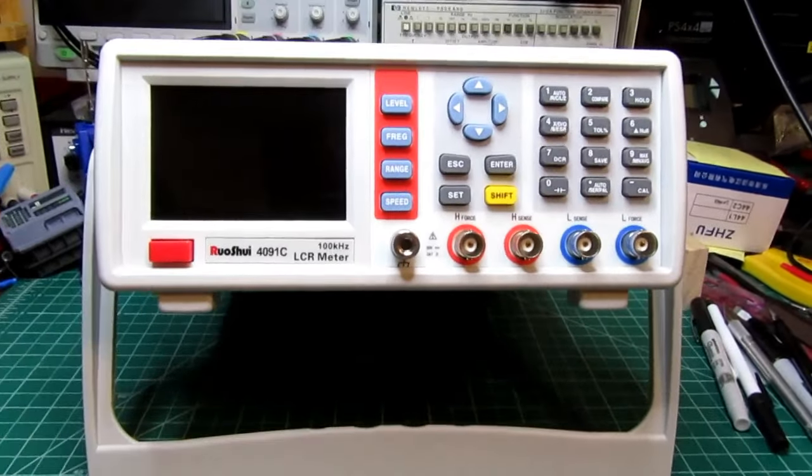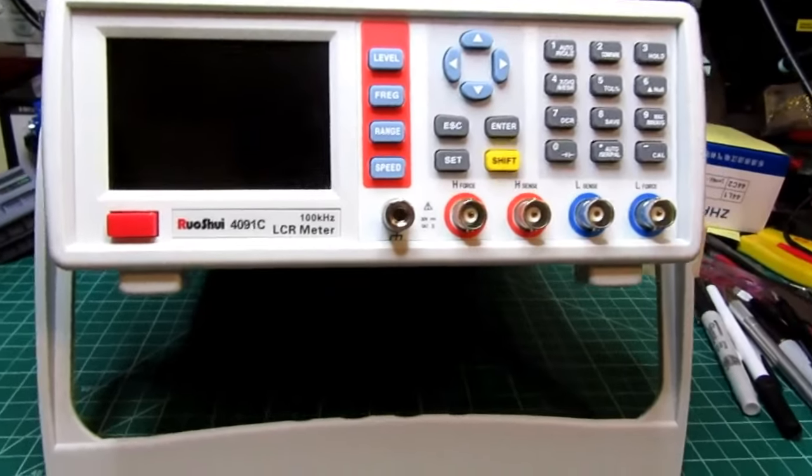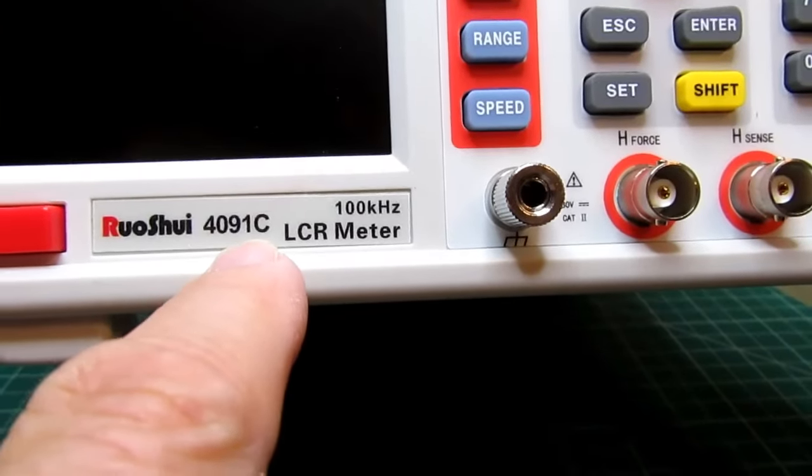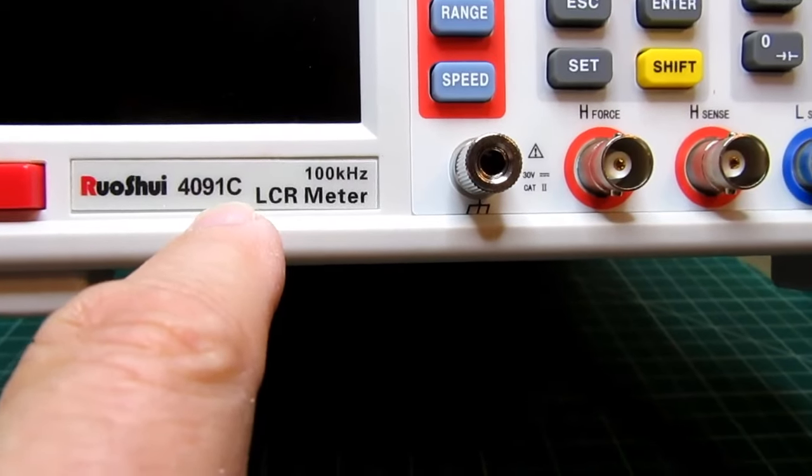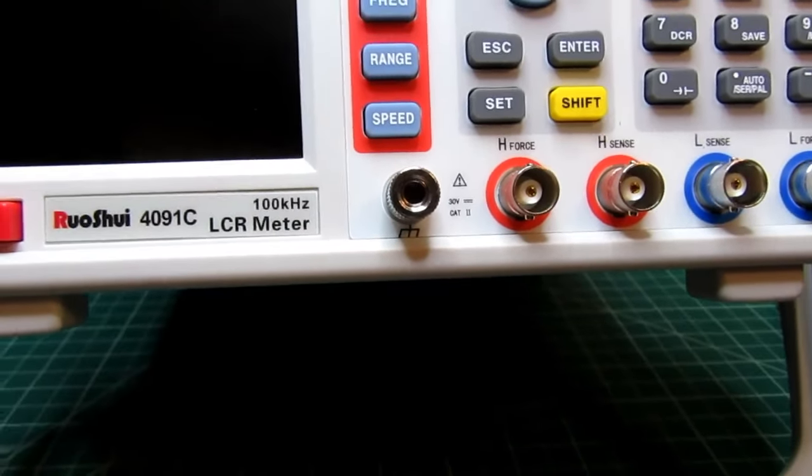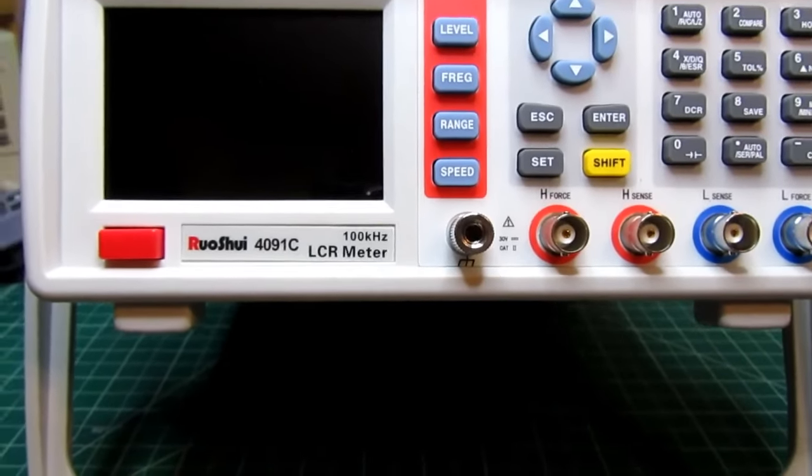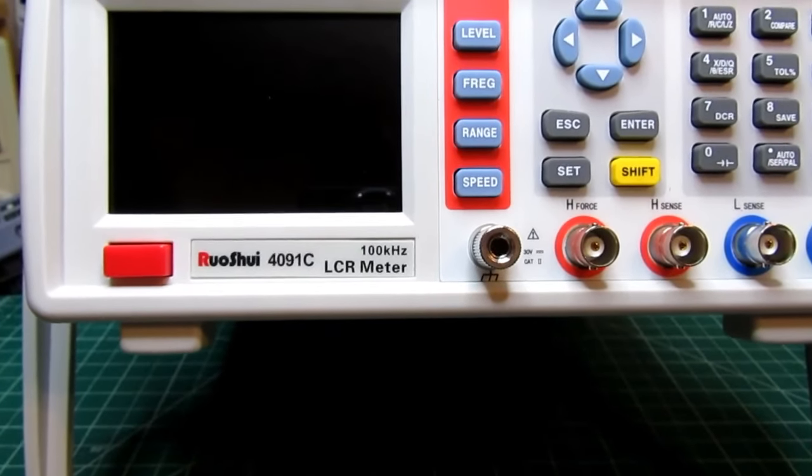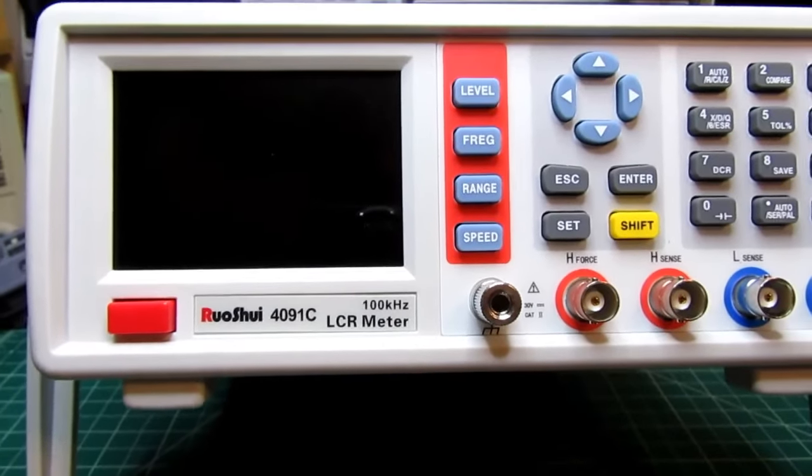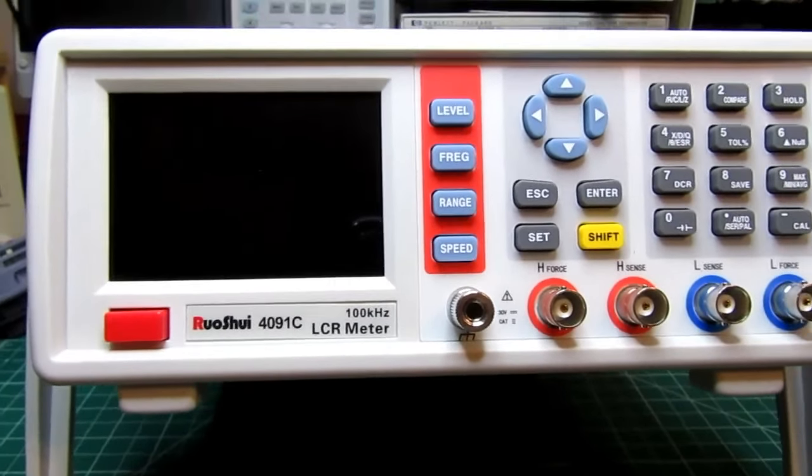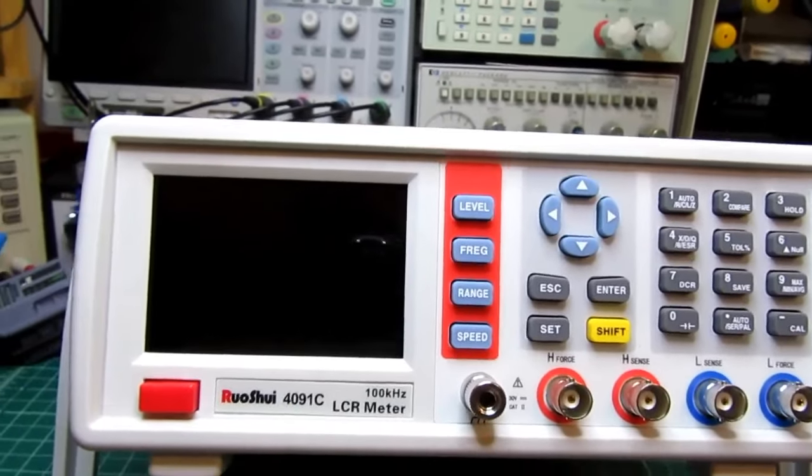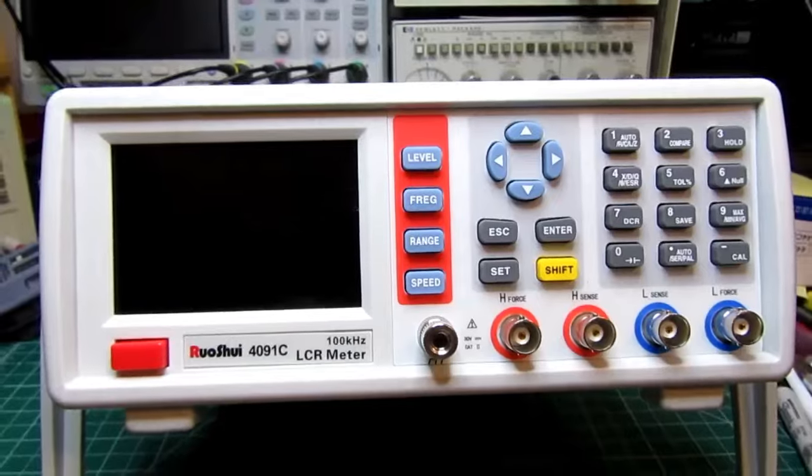Alright, here's the Ruo Shui model 4091C. It's a maximum 100 kilohertz LCR meter, and that means it can measure things associated with inductors, capacitors, and resistors in ways pretty much far beyond what a multimeter can do or even a simple capacitor or inductor tester.